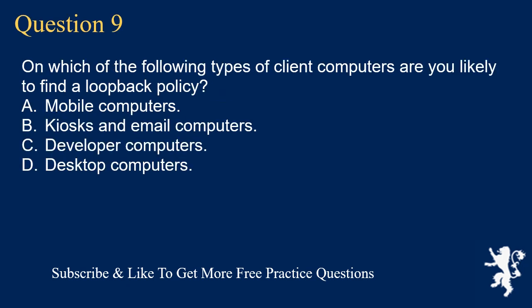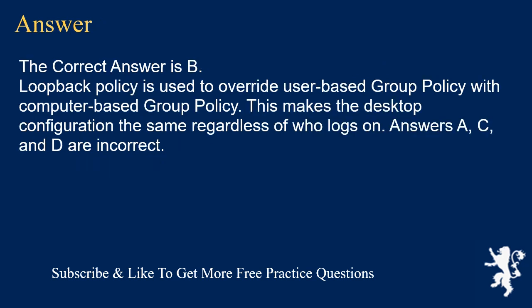Question 9. On which of the following types of client computers are you likely to find a loopback policy? A. Mobile computers. B. Kiosks and email computers. C. Developer computers. D. Desktop computers. The correct answer is B. Loopback policy is used to override user-based group policy with computer-based group policy. This makes the desktop configuration the same regardless of who logs on. Answers A, C, and D are incorrect.